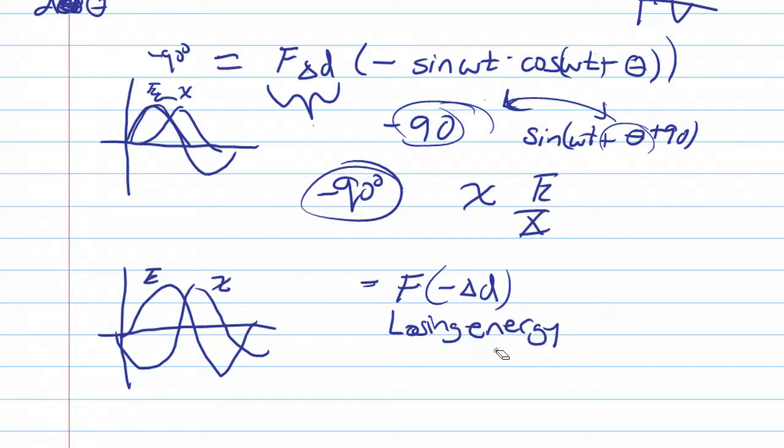So basically we want the most work in, and the way we get the optimum condition is by this negative 90, which actually refers to the zero phase with regards to the velocity.